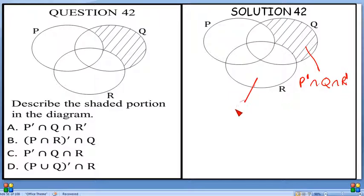This particular place is P prime intersection Q prime intersection R.